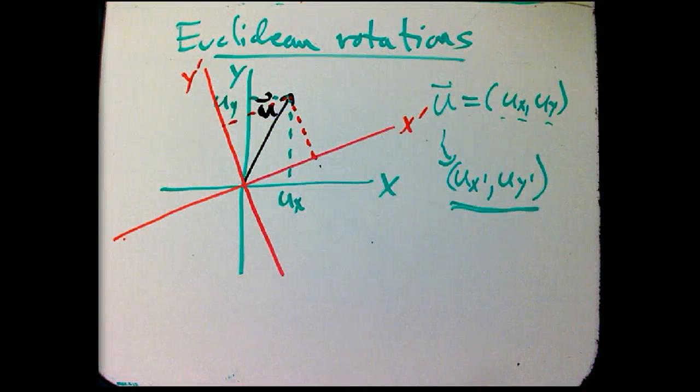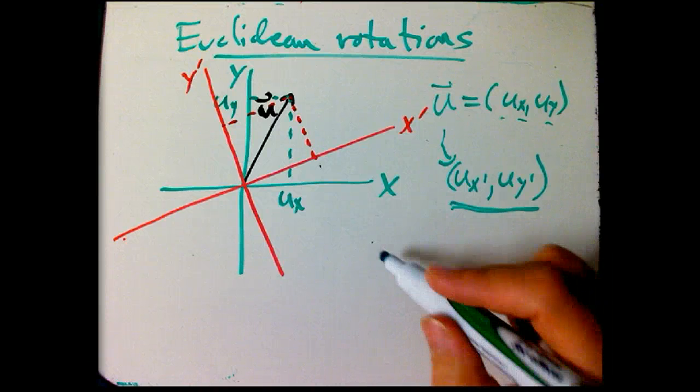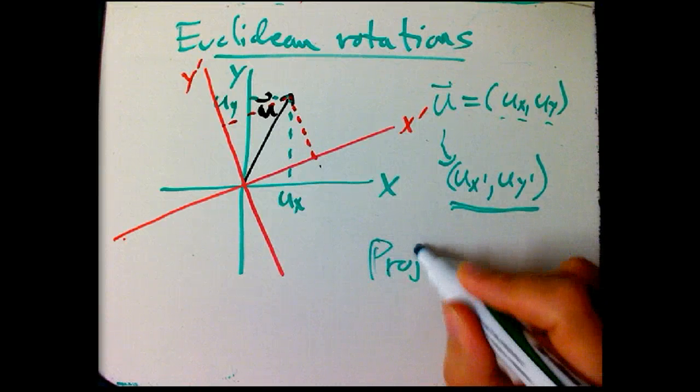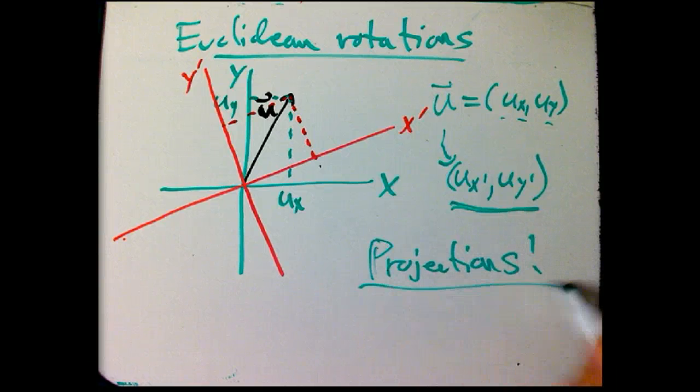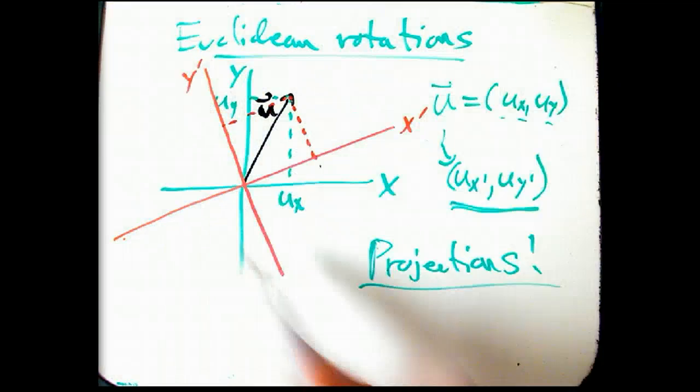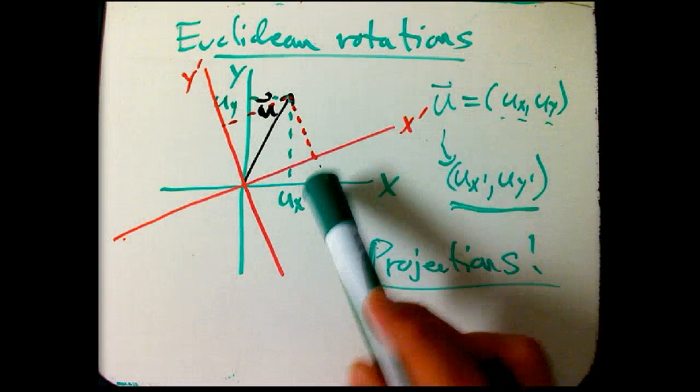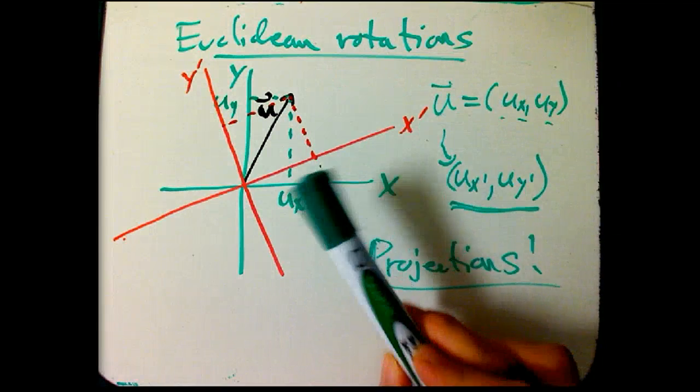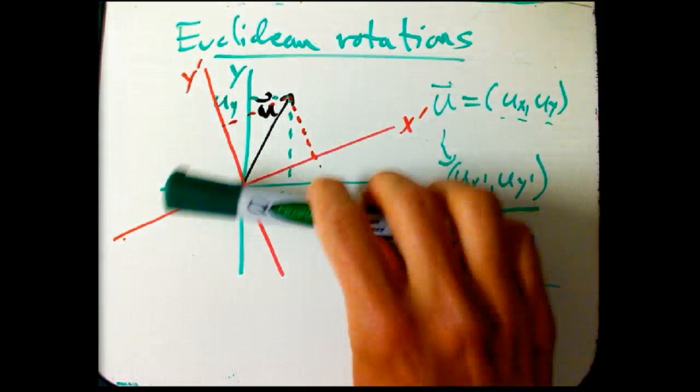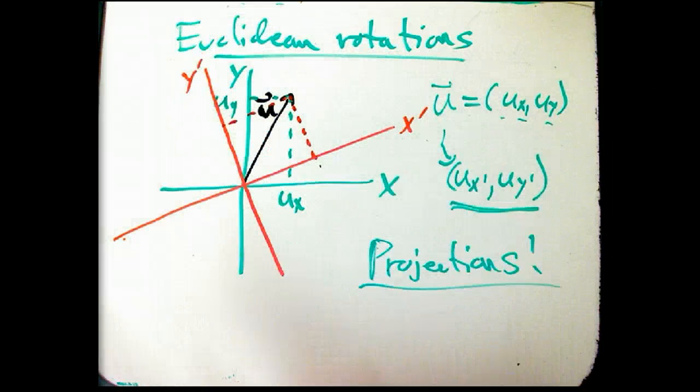Projections are our bread and butter here. The way I've been presenting things, it's our main tool. And so we just need a vector along this direction, a vector along this direction. And really, the first thing we need to do is to say, okay, how much am I rotating? What is the parameter that tells me how different X and X prime are, and how different Y and Y prime are?